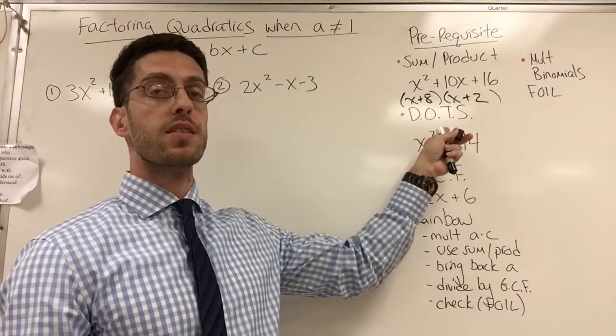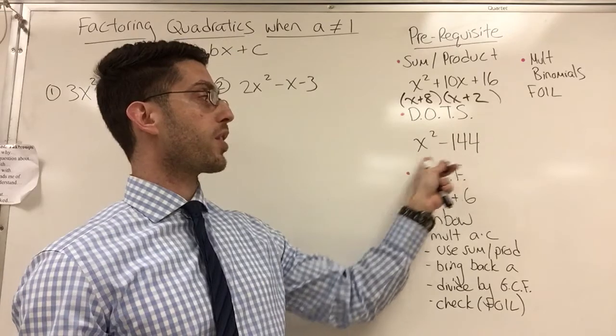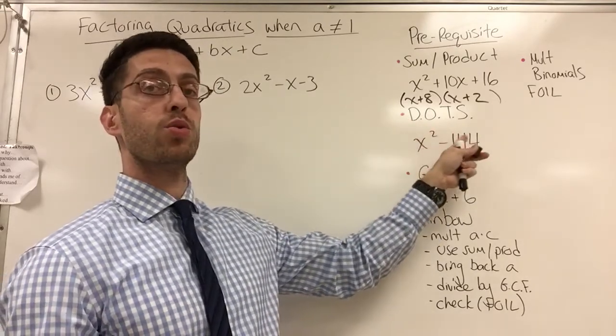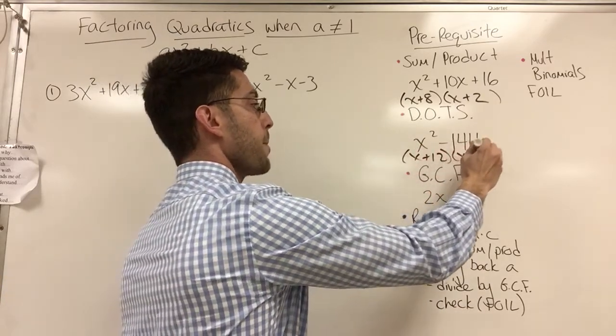Here, you also have to be familiar with DOTS, which is a special version of the sum product method. If I want to factor this, x squared minus 144, that's a difference of two squares. So that's x plus 12 and x minus 12.